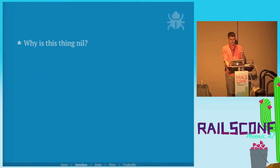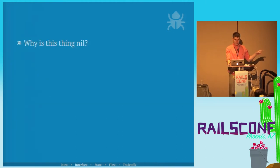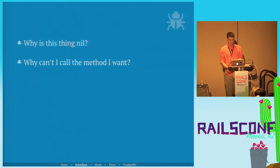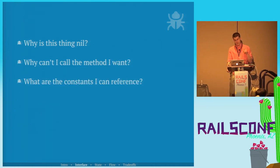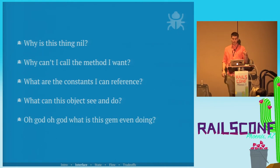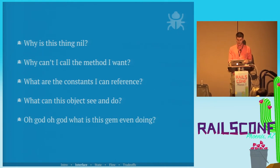Interface problems answer questions like: why is this thing nil? — the most common thing, 'undefined method blah blah blah for nil.' Why can't I call the method I want? What are the constants I can reference? What can this object see and do? And, in true millennial fashion: what is this gem even doing?